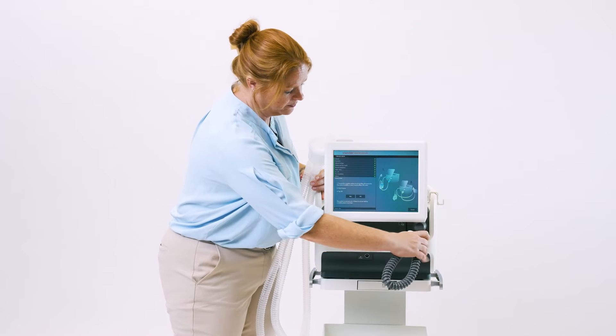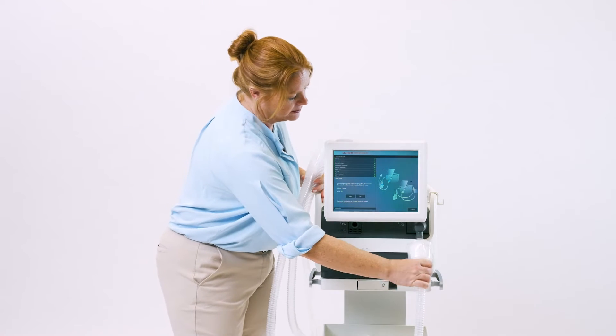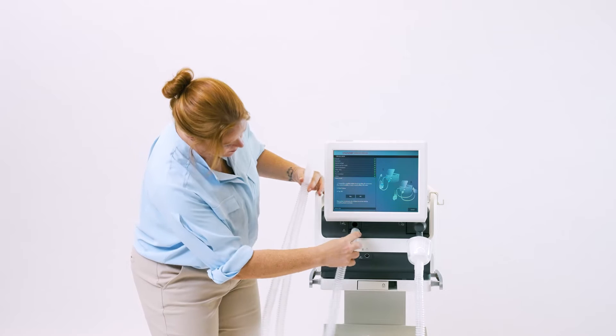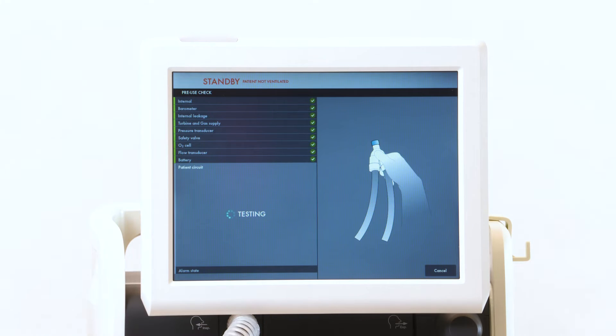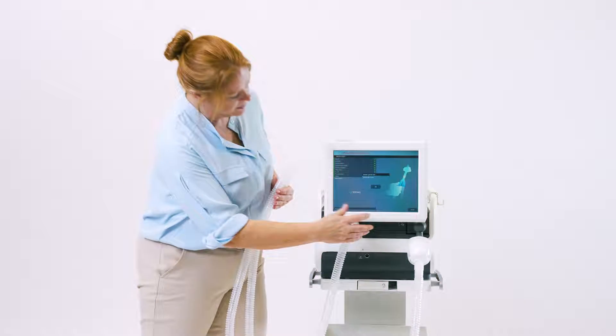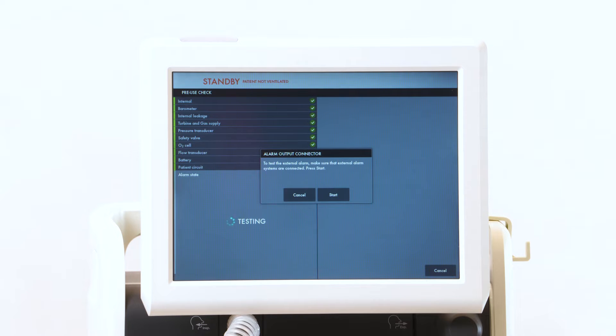Disconnect your test tube and connect your circuit. Then hit OK in order to start the calibration. Unblock the tube and press OK. Your pre-use check is then complete.